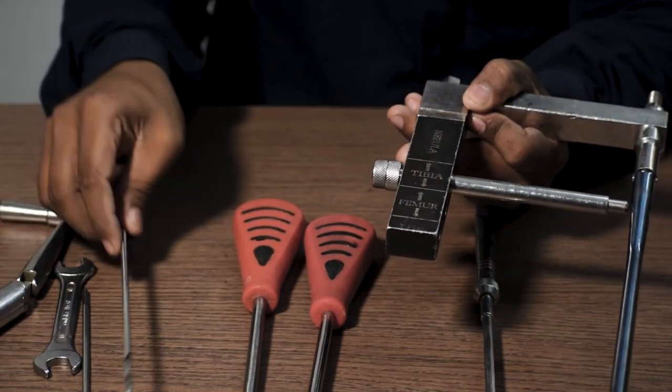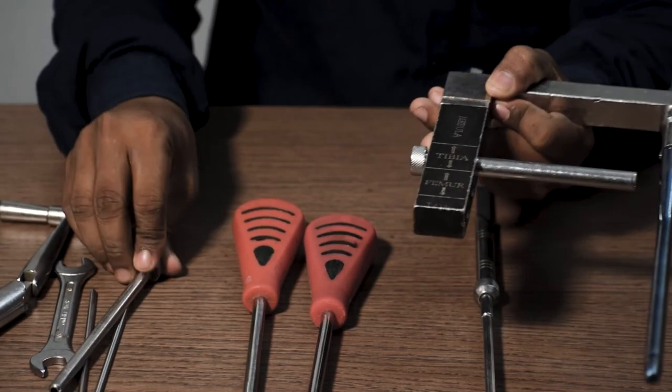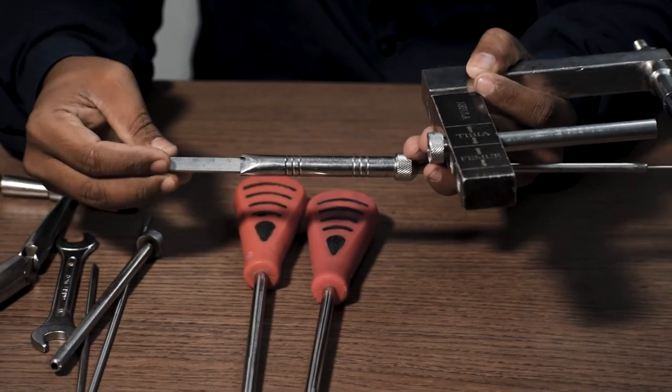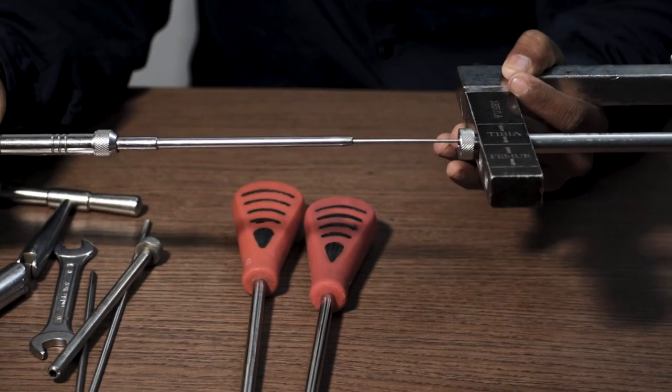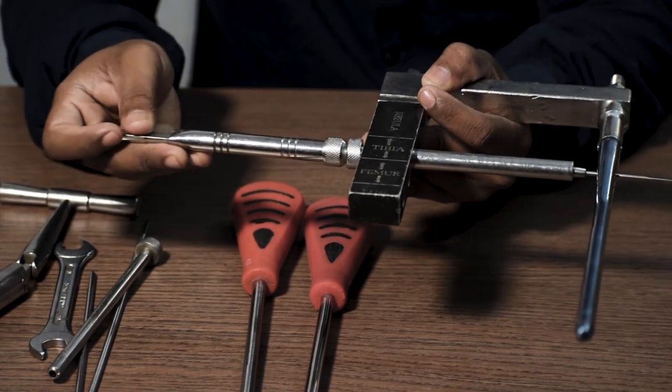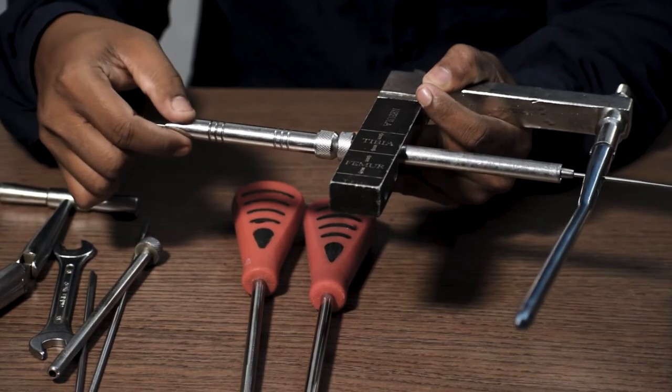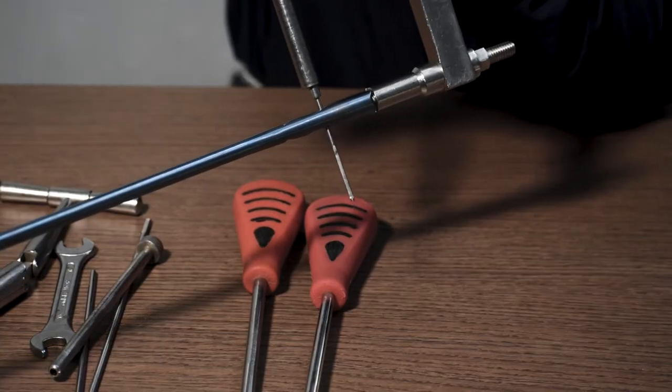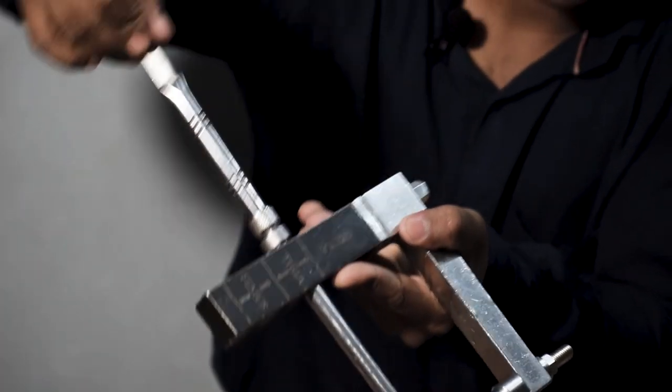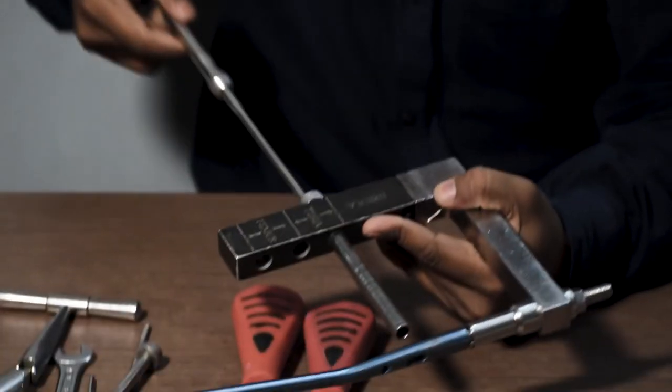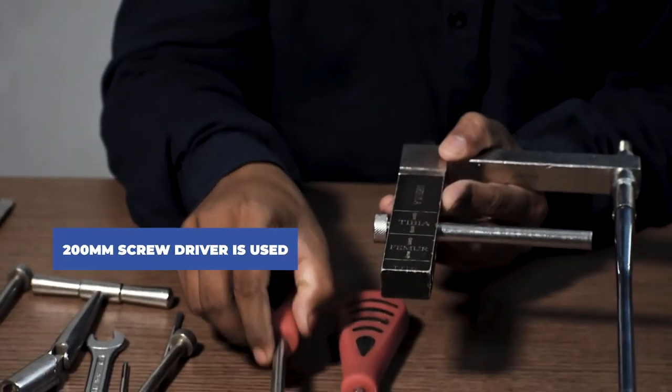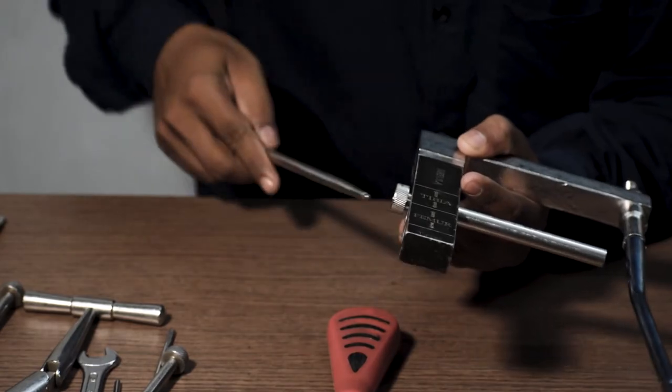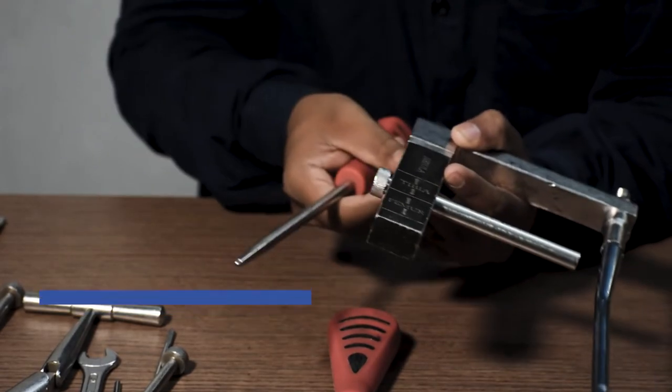After that, drill sleeve is taken out and depth gauge is used to measure the length of the interlocking bolt which is needed to be fixed. It is inserted through the protection sleeve and checks the depth of the hole to have an idea of the length of the interlocking bolt needed.